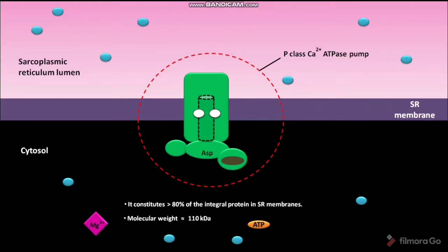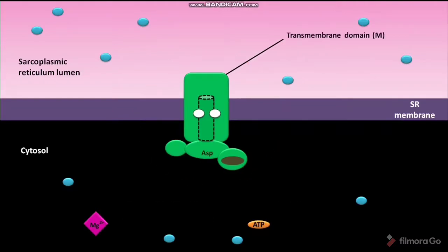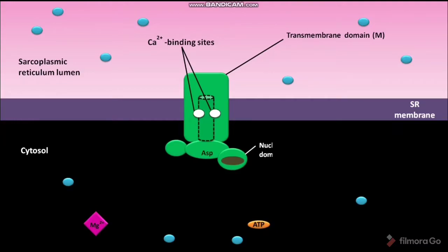The first domain is called the transmembrane domain, denoted as capital M. It anchors the protein to the sarcoplasmic reticulum. The transmembrane domain has two CA2+ binding sites.